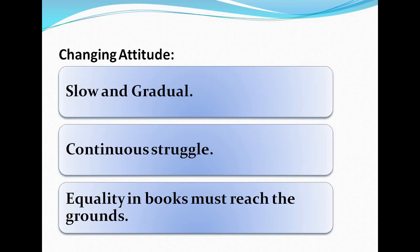What were the changing attitudes? The changing attitudes are very slow. Even though persons are aware that discrimination is against the law, they continue to treat people unequally on the basis of their caste, religion, or disability. This requires a continuous struggle. Equality in books must reach the ground — the things we study should not only be on paper but also be implemented and kept in the minds of the youth. Establishing equality in a democratic society is a continuous struggle.